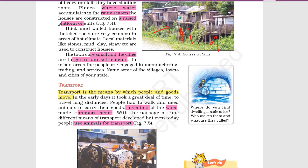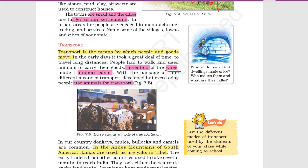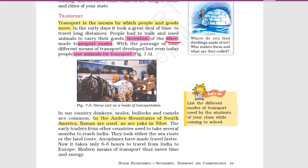The second part is transport. Transport is the means by which people and goods move. When the wheel was invented, transport became quite easy. In many places, especially in hill areas, animals are still used — like donkeys, mules, bullocks, and camels. In the Andes mountains of South America, llamas are used, and in the Himalayas, yaks are used.